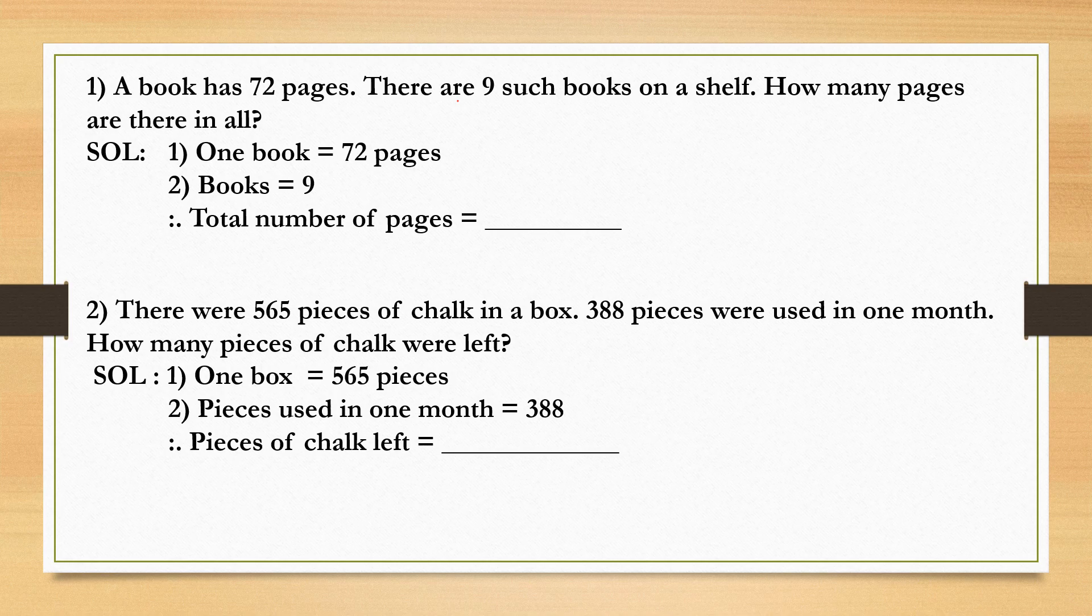Number 2: books equal 9. Therefore, total number of pages equals how much? Let's do a solution box here. So we know that 1 book has 72 pages and 9 books are there. So what will be the total number of pages?